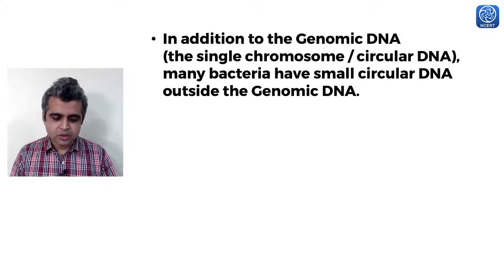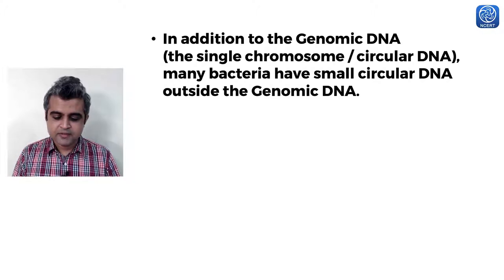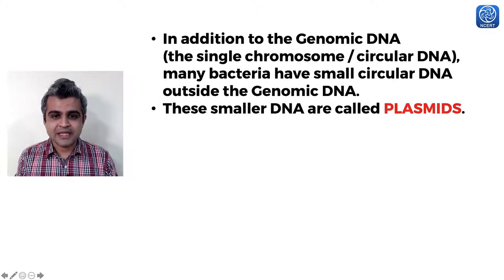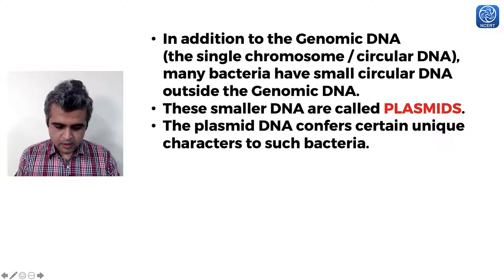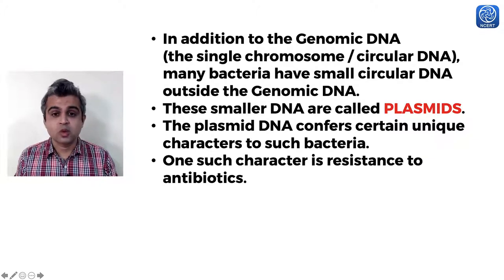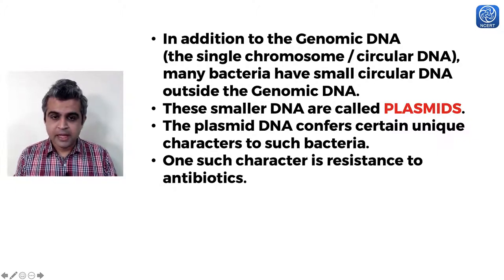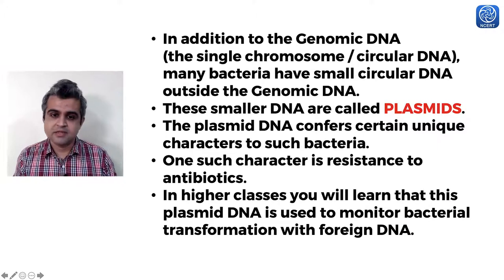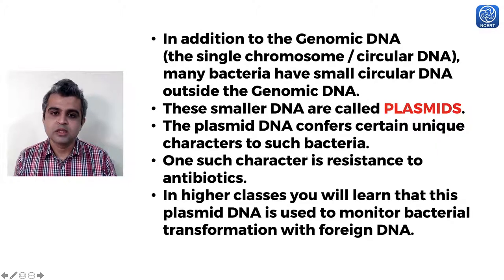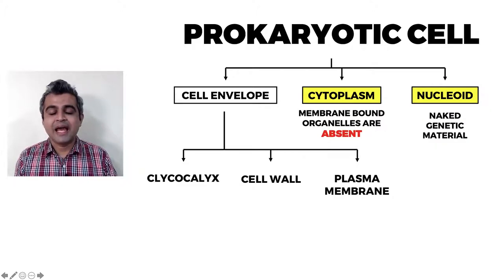NCERT states: in addition to the genomic DNA (the circular chromosome), many bacteria have small circular DNA outside the genomic DNA called plasmids. Plasmids are extra-chromosomal, autonomously replicating mini chromosomes. Plasmid DNA confers unique characteristics to bacteria, such as antibiotic resistance. In higher classes (class 12 biotechnology), you will learn that plasmid DNA is also used to monitor bacterial transformation with foreign DNA.